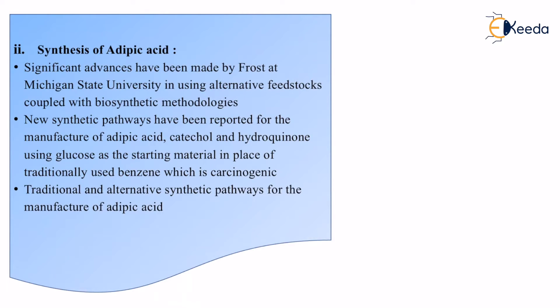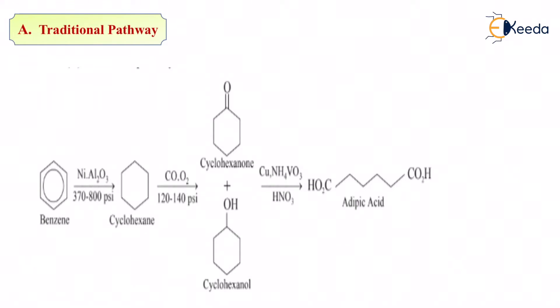Traditional and alternative synthetic pathways for the manufacture of adipic acid. Let us see the different pathways. The traditional pathway: if you see over here, traditionally the first thing I have is benzene. If I have cyclohexane with three alternating pi bonds, which are shown in the form of a circle, that particular compound is known as benzene.